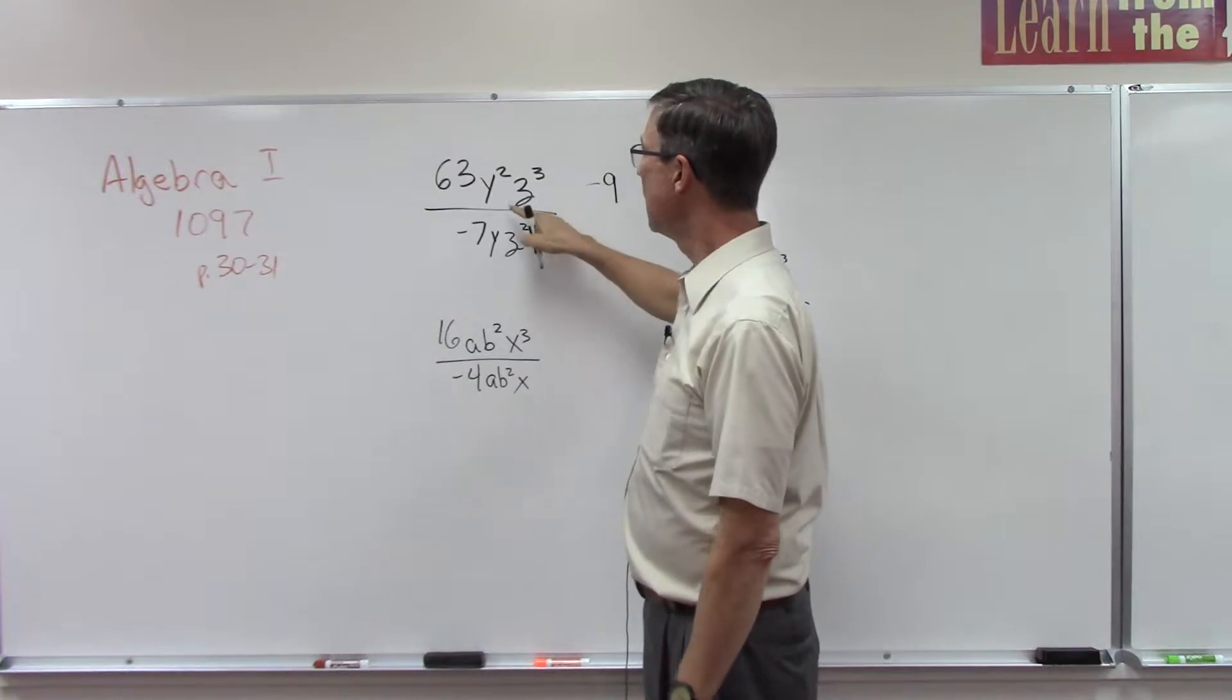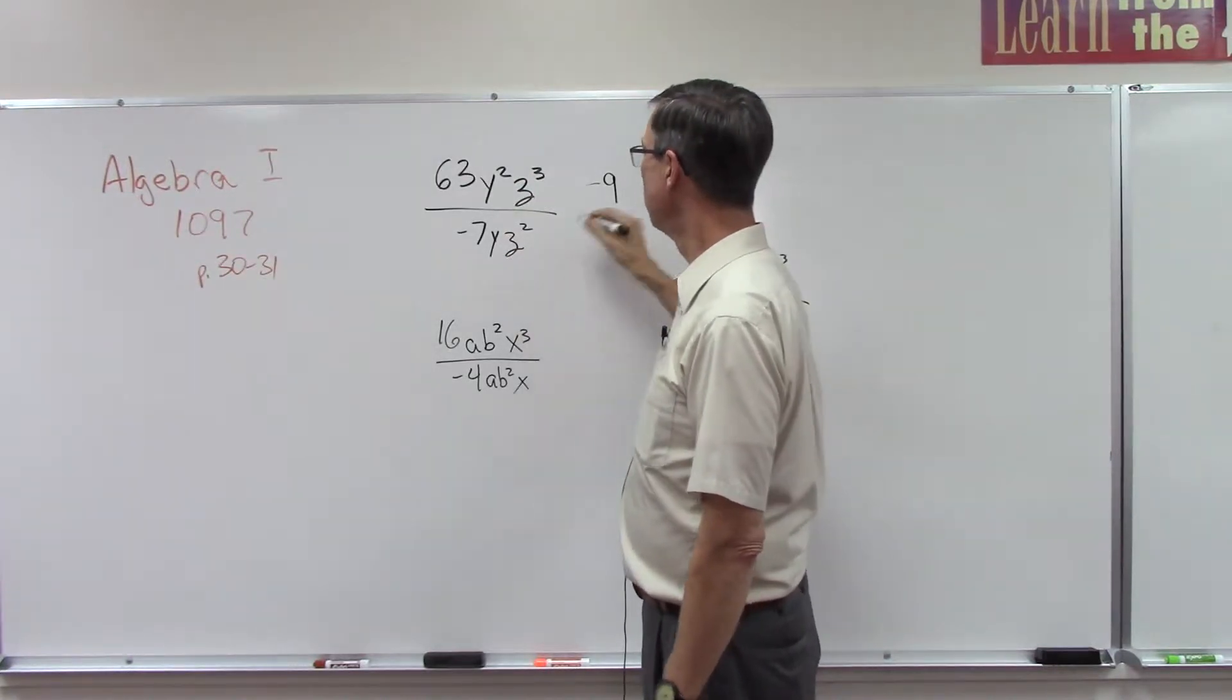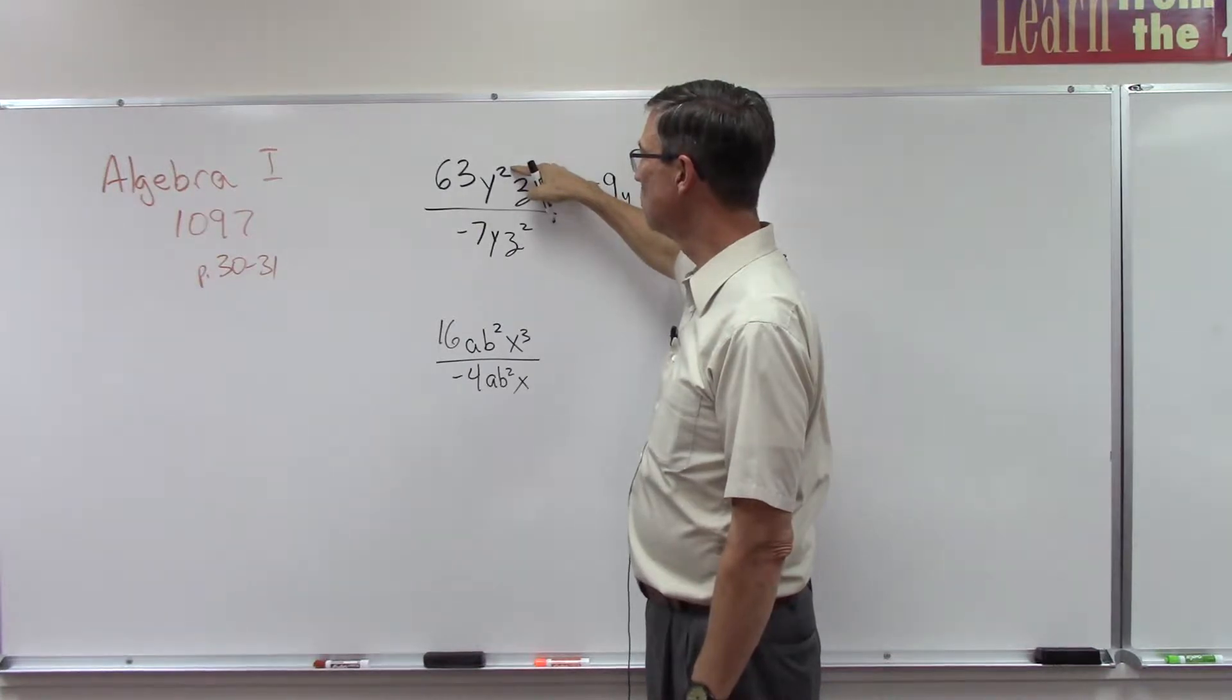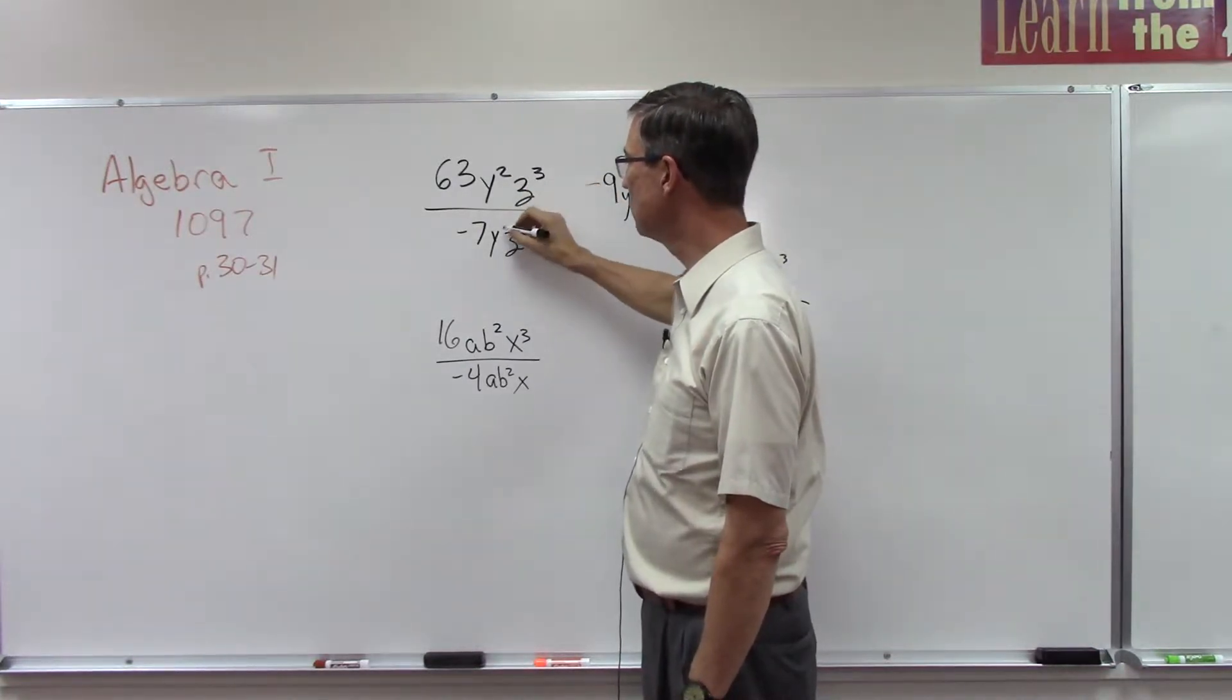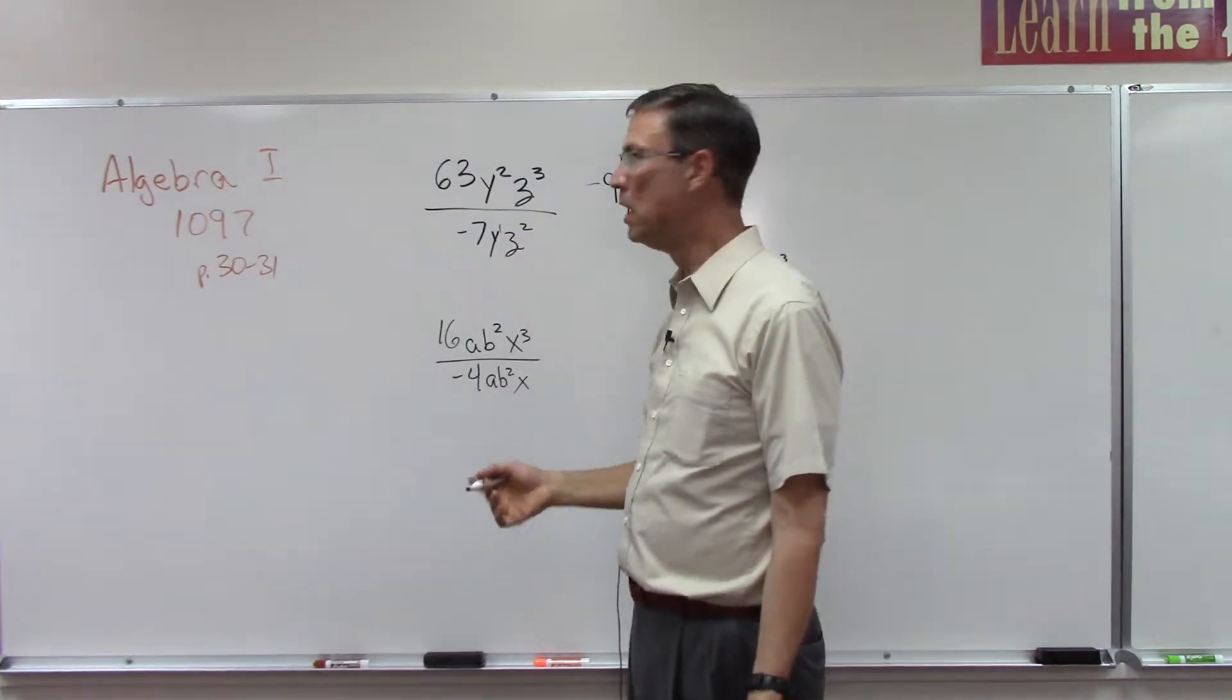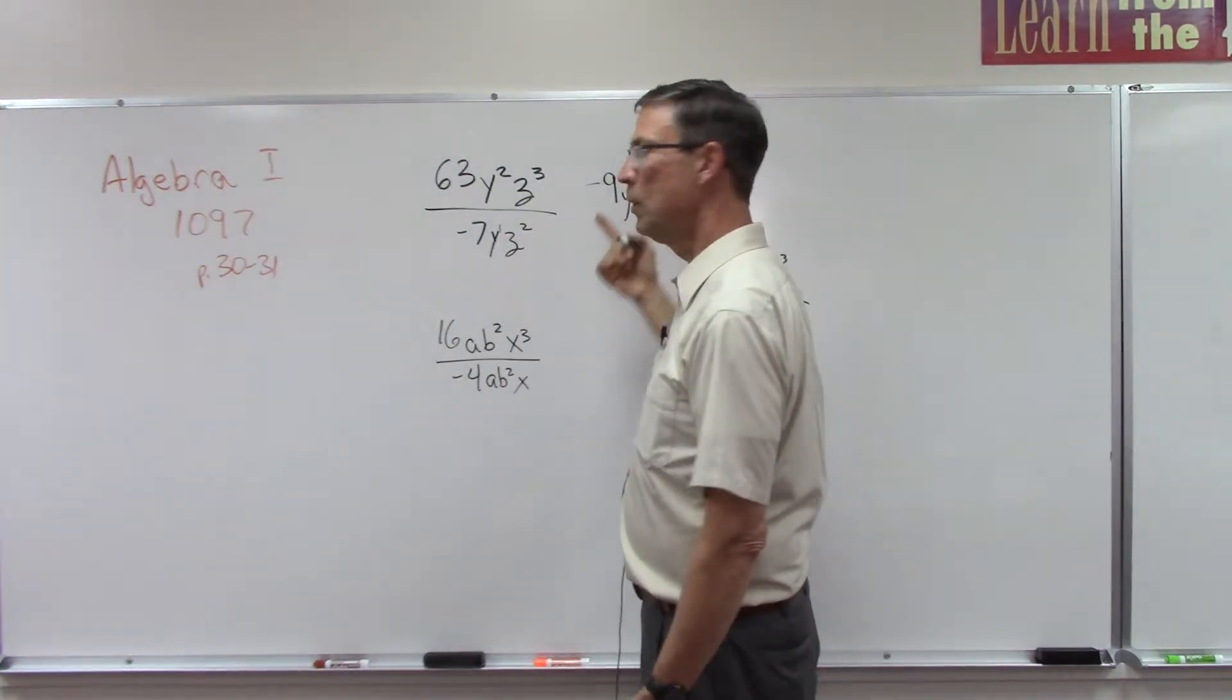I have a y on the top and a y on the bottom, so we're going to take the numerator and subtract this exponent here, so 2 minus 1 is 1. So we could write y¹ or we could just leave it as y.